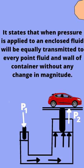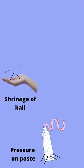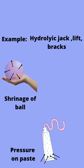In this example of a hydraulic jack, when pressure is applied to one side of the jack, it will be equally transmitted to the other side of the jack and causes the lifting of a car.